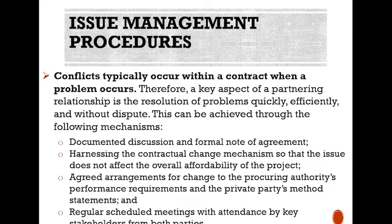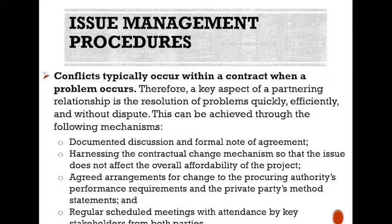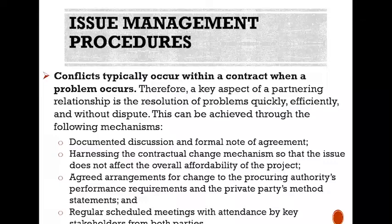Issues management procedures. Conflicts typically occur within a contract when a problem occurs. Therefore, a key aspect of a partnering relationship is resolution of problems quickly, efficiently, and without disputes. Conflicts can be resolved through the following mechanisms: documented discussion and formal notes of agreements; activating the contractual change mechanism so that the issue does not affect the overall affordability of the project; agreed arrangements for change to the procuring authority's performance requirements and the private party's method statements; and regular scheduled meetings with attendance by key stakeholders from both parties.